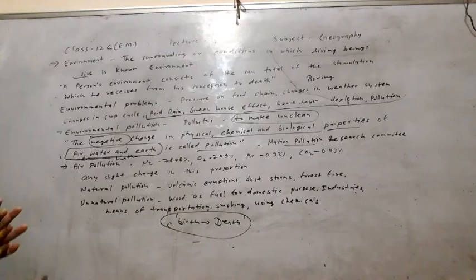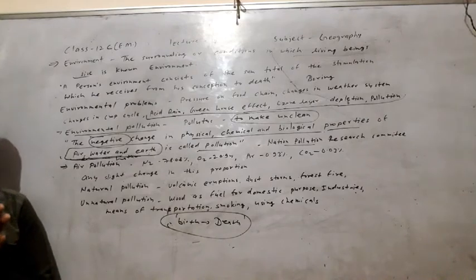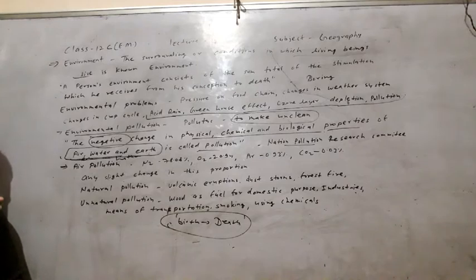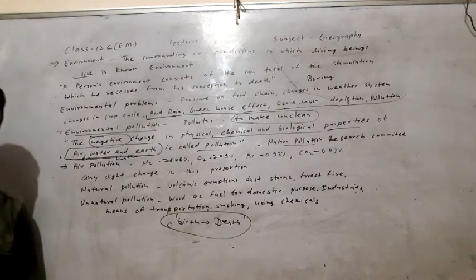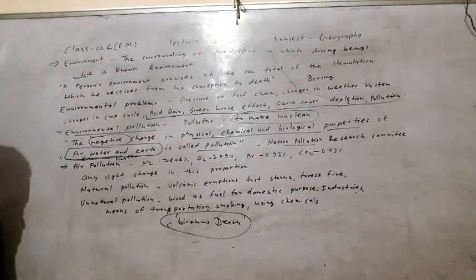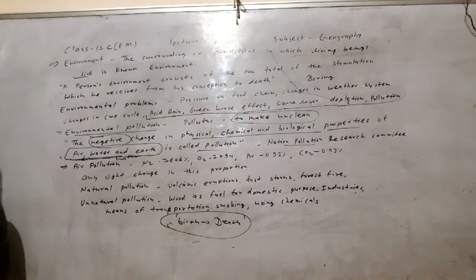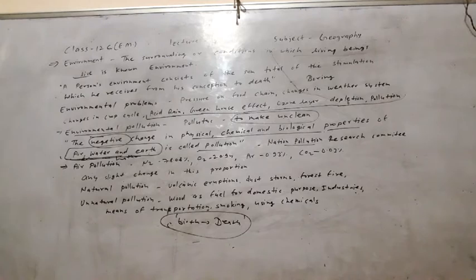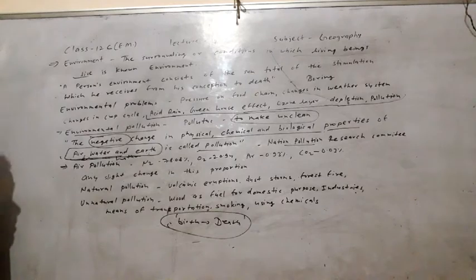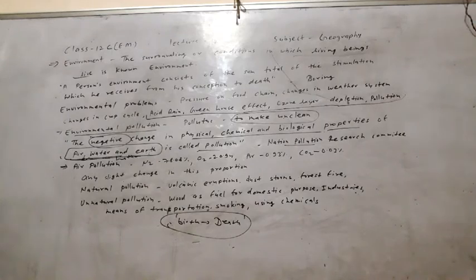Different types of pollution are created by natural disasters as well — like volcanic eruptions — and also by humans and industries. The types of pollution include: air pollution, water pollution, noise pollution, soil pollution, vehicle pollution, marine pollution, gravel pollution, industrial pollution, thermal pollution, and other types. When the main properties of the environment are made unclean by humans and nature, that is called environmental pollution.